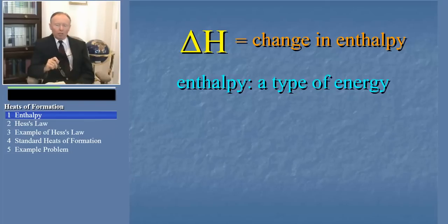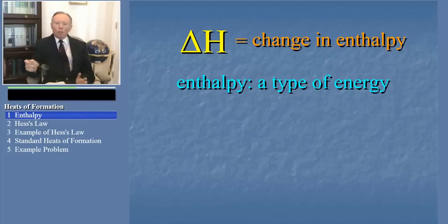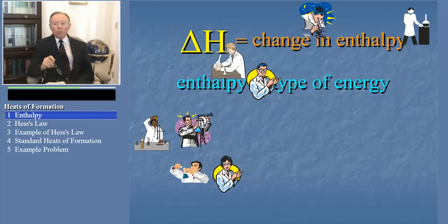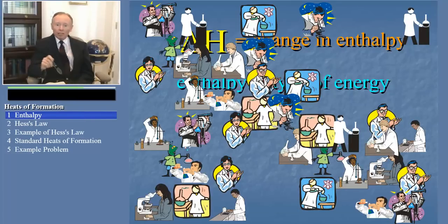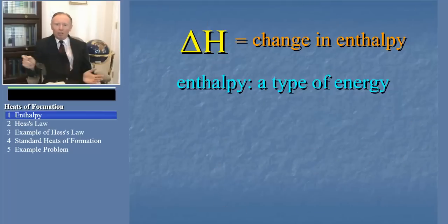One way of finding delta H is to go in the lab and measure it using a calorimeter. But there are millions of compounds, and therefore millions of reactions. So it would keep a lot of chemists employed for centuries, if not millennia, to directly measure every possible delta H. That's not practical.